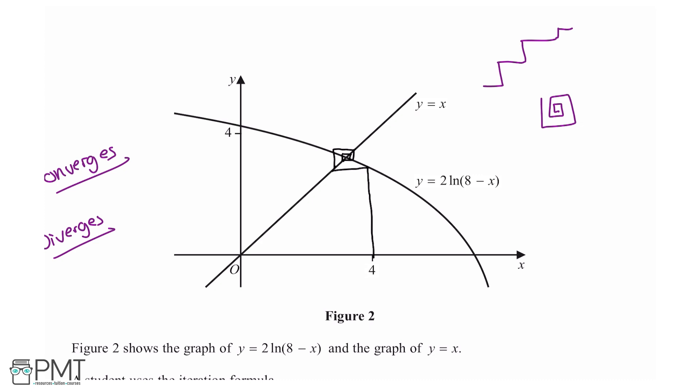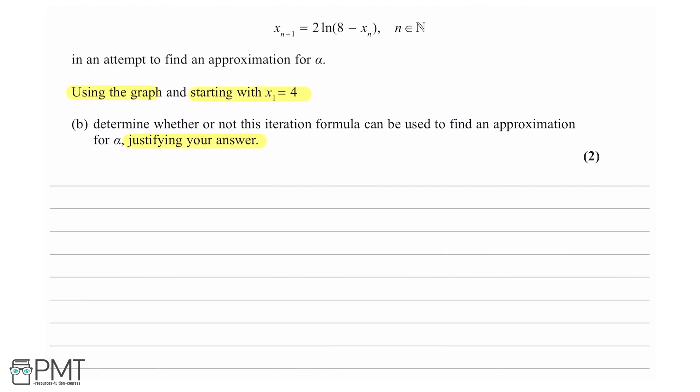Now that's only part of the argument because remember we have to justify it. What we need to say to get our marks is: the iteration formula can be used to find an approximation for α. We need to word it exactly like this because saying 'can be used' means we're answering the question directly, and by writing 'find an approximation for α' we're using what the examiner has given us. Remember we need to justify our answer, so just drawing the diagram isn't enough.